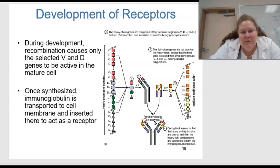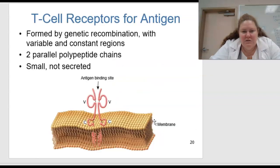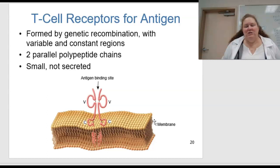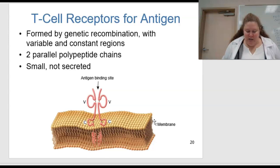During this development, recombination causes only the selected V and D genes to be active in the mature cell. Once made, the immunoglobulin is transported to the cell membrane to be inserted there and act as a receptor. T cell receptors for antigens are formed by genetic recombination with variable and constant regions, and there are two parallel polypeptide chains — these are small and they are not secreted.